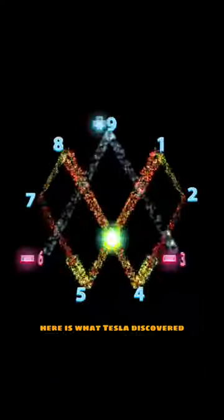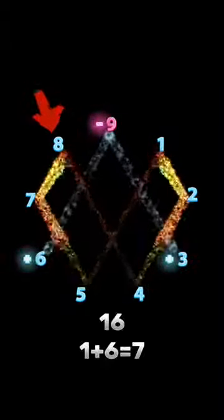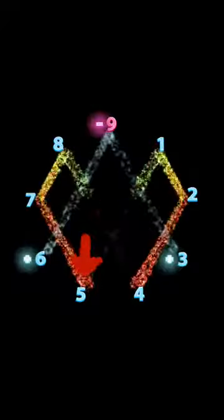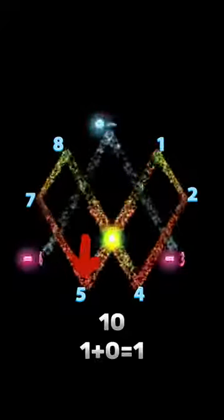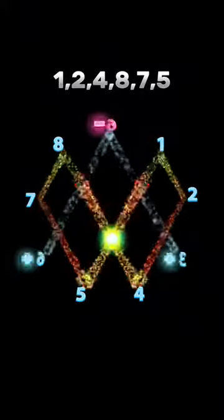Here is what Tesla discovered. When doubling 1, we get 2. Doubling 2, we get 4. Doubling 4 for 8. Doubling 8 for 16. A total of 16 is 7. Doubling 7 for 14. A total of 14 is 5. Doubling 5 for 10. A total of 10, we return to number 1. And this pattern repeats endlessly without the appearance of the number 3, 6, 9.